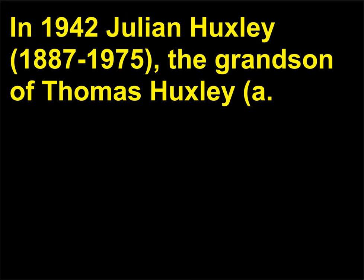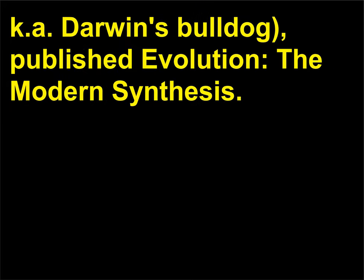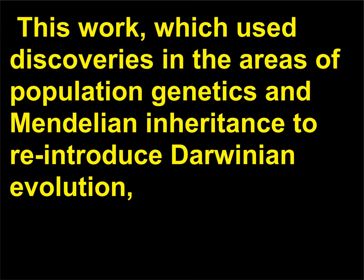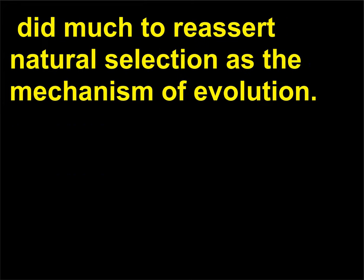In 1942, Julian Huxley, 1887–1975, the grandson of Thomas Huxley — Darwin's Bulldog — published Evolution: The Modern Synthesis. This work, which used discoveries in the areas of population genetics and Mendelian inheritance to reintroduce Darwinian evolution, did much to reassert natural selection as the mechanism of evolution.